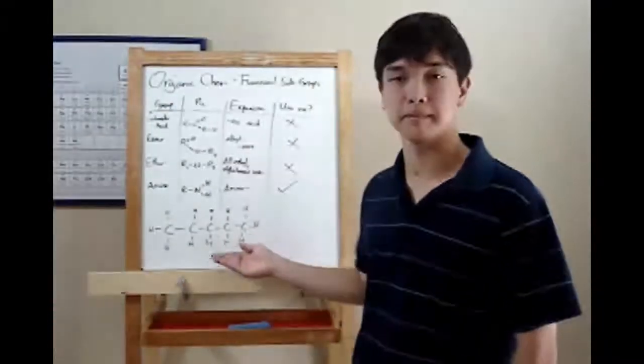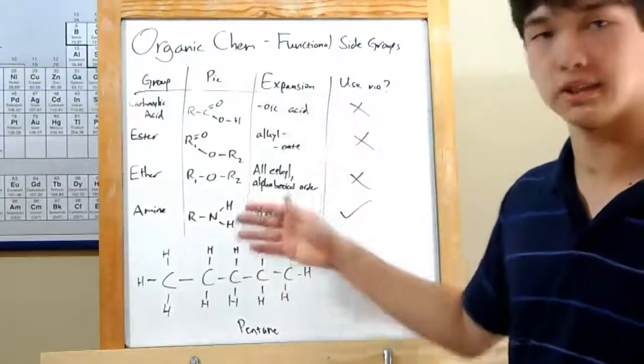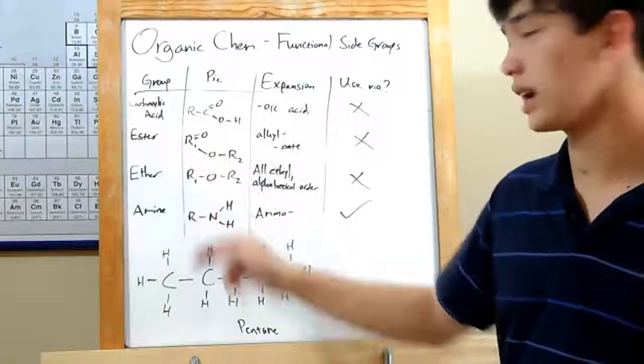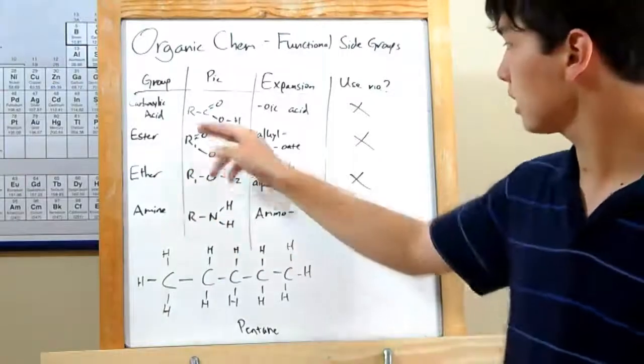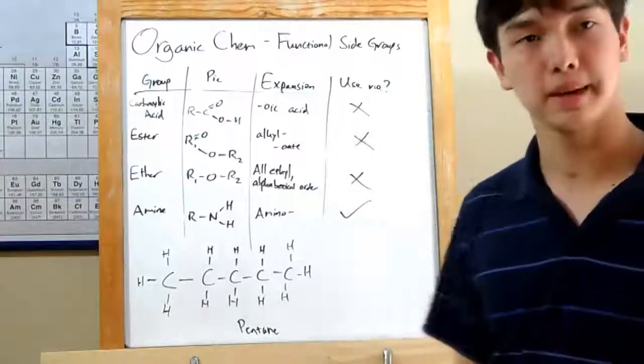We've got here a lovely pentane molecule, five C's, and we're going to start attaching these functional side groups. Notice this notation I have with R's. Remember, an R is just a placeholder for any carbon chain you can think of, like our pentane right here.